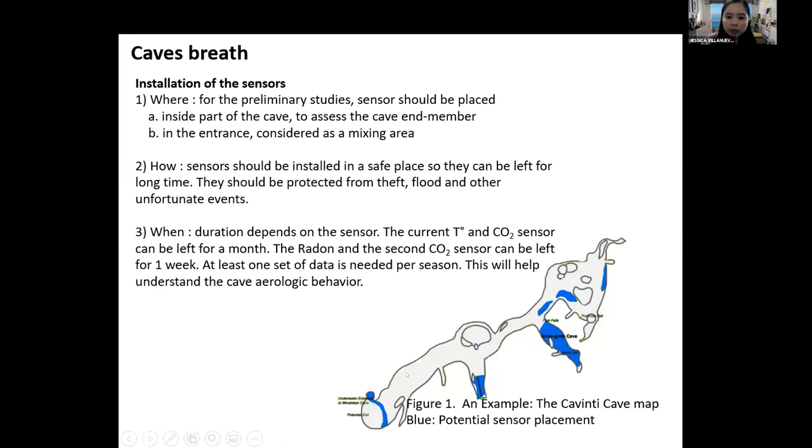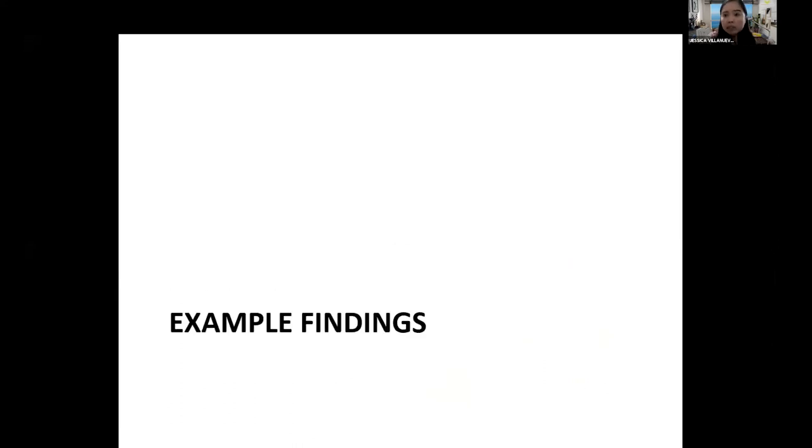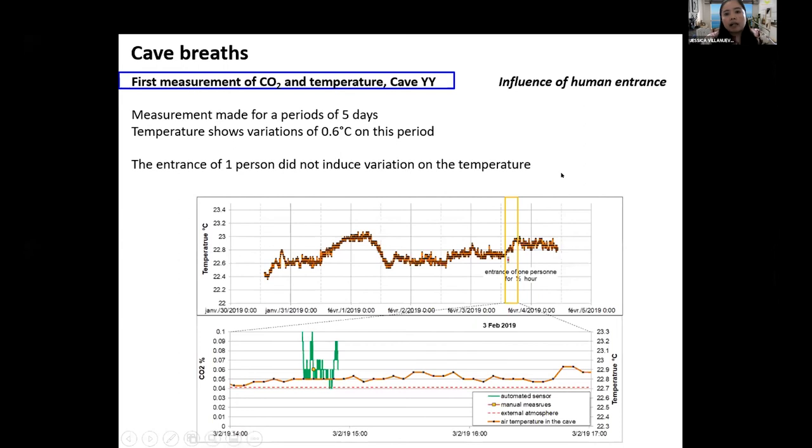We have some example findings based from our past studies. This is not from the Philippines, but I think it can be very useful in terms of our study here. Here we look into mostly the temperature. We are asking if a human enters the cave, how can that human affect the temperature and the CO2? The measurements were made for five days, and here you see the yellow zone—it's where the human entered. We see that the temperature shows variation of 0.6 percent in this period. Well, one person of course will not induce a lot of variation, but there's still a change. Imagine if we will have some more.